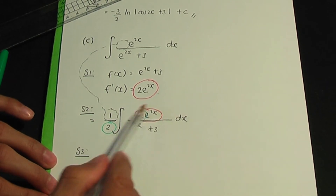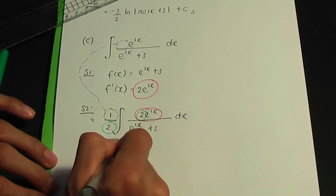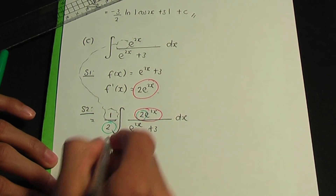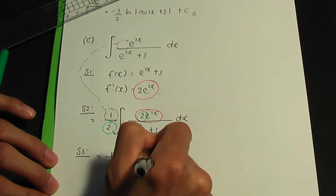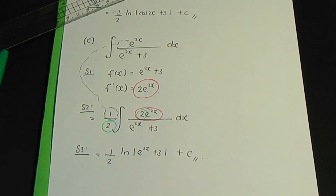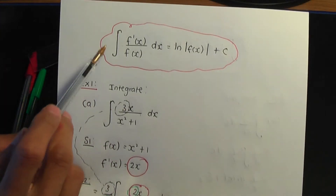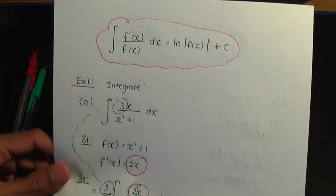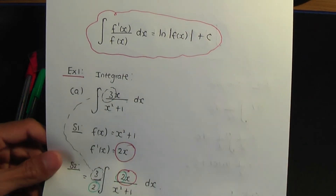Since our term is of the form f prime over f of x, step 3 gives the answer: 1 over 2 times ln the modulus of e to the 2x plus 3, plus c. That completes the example. These are the steps involved to use the result: the integral of f prime over f of x with respect to x equals ln the modulus of f of x plus c.